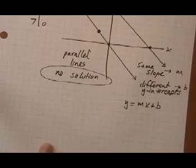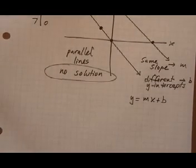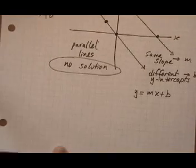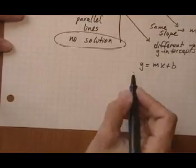So what you can do is solve each of the equations and put it into the mx plus b form. So let's go ahead and do that and double-check to see that we get the same slope with different intercepts.